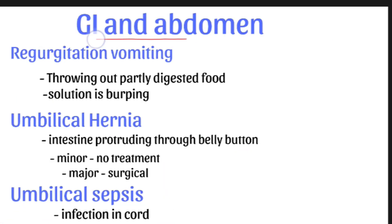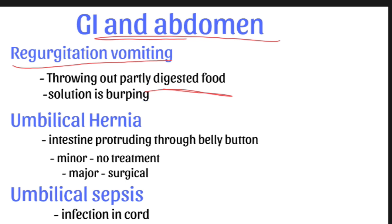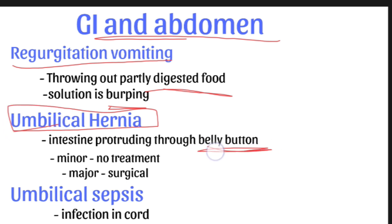GI and abdomen: the first issue is regurgitation or vomiting — throwing out partially digested food. After giving breastfeeding, we advise the mother to burp the baby by placing the baby on the shoulder, making the baby lie on its stomach, or making the baby sit straight, then rubbing on the spine. By doing this, regurgitation will not occur.